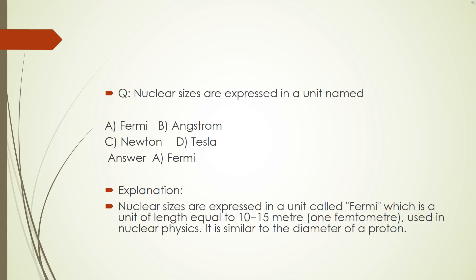Question number 2. Nuclear sizes are expressed in a unit named A, Fermi, B, Angstrom, C, Newton, D, Tesla. The correct answer is A, Fermi. Nuclear sizes are expressed in a unit called Fermi, which is used as the unit length equal to 10 to the power minus 15 meter, 1 femtometer. Used in nuclear physics, it is similar to the diameter of a proton.